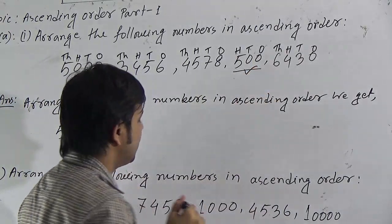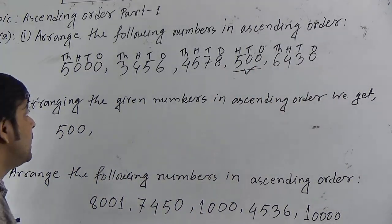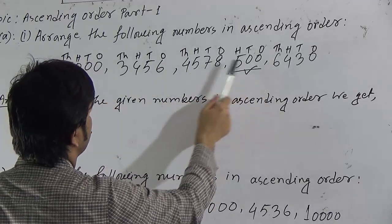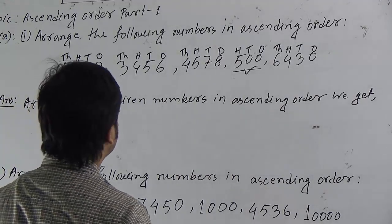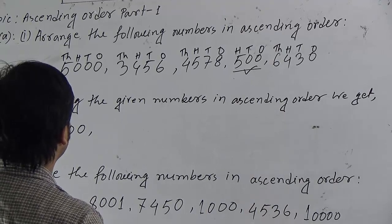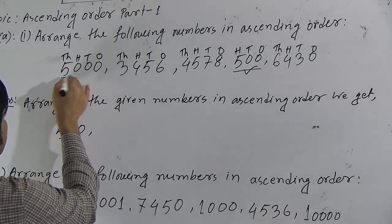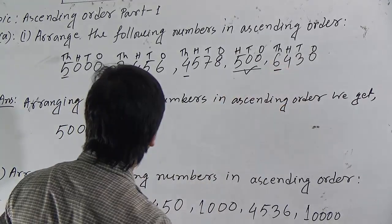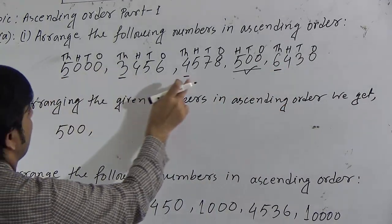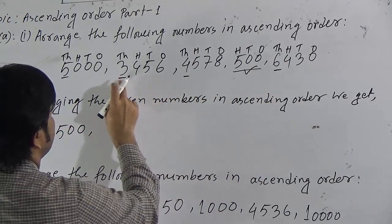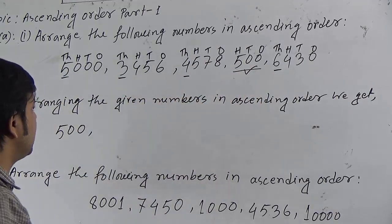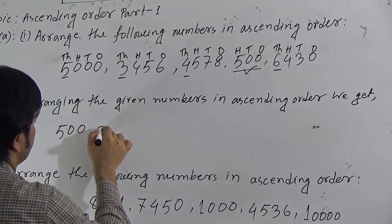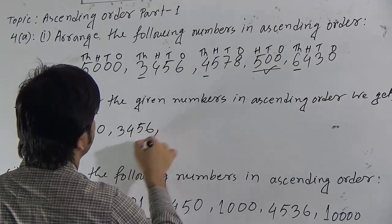Now I have done the first one. Now, among the remaining four numbers — all of which contain a thousands position — to find the smallest, we compare the thousands positions. The thousands positions are: five, three, four, and six. Among these, three is the smallest. So 3,456 will be the smallest among these four numbers.